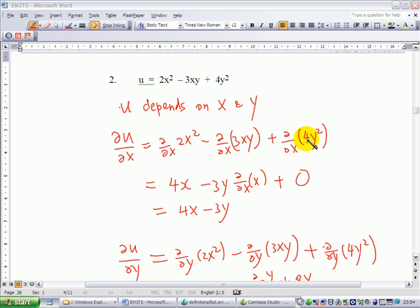Now for each term, when you differentiate 2x squared with respect to x, you get 4x. When you differentiate 3xy with respect to x, notice that y is treated as constant.